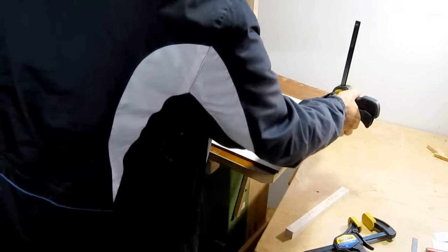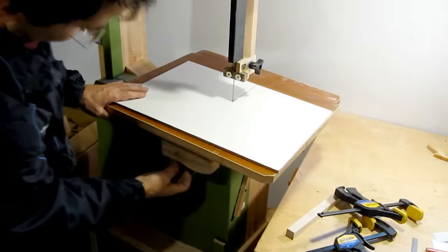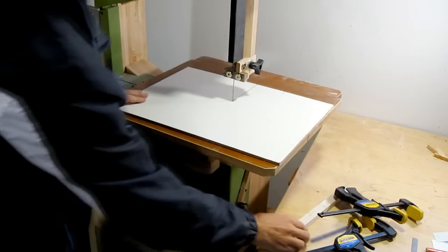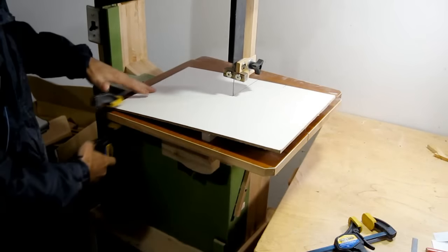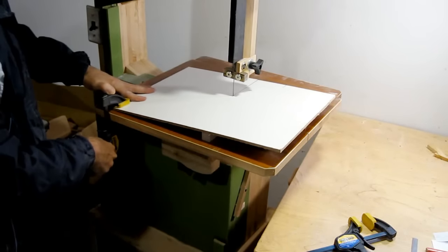Next we need to tilt the bandsaw table to the left. Now in a lot of bandsaws, including mine, the table doesn't actually tilt to the left. So what I'm doing is putting a piece of wood underneath the piece of plywood that I've got on top of the table, which will give me about a 5 degree left tilt.